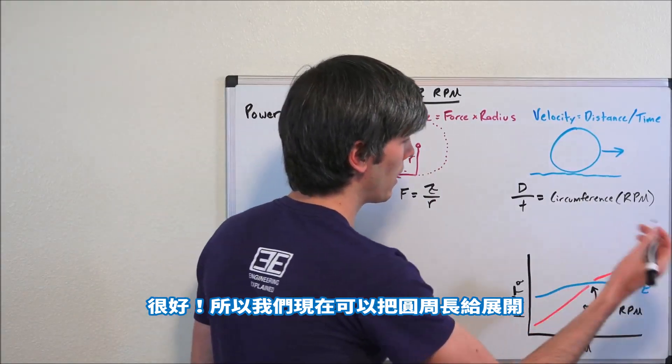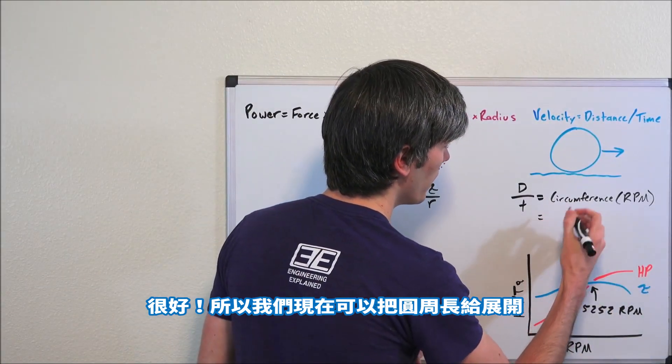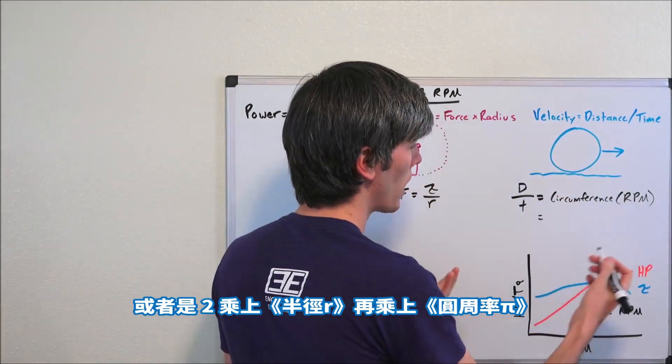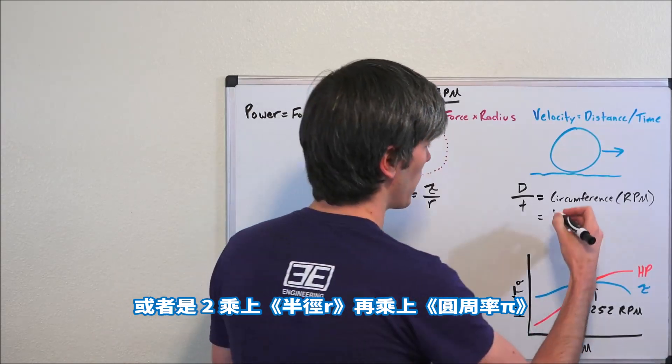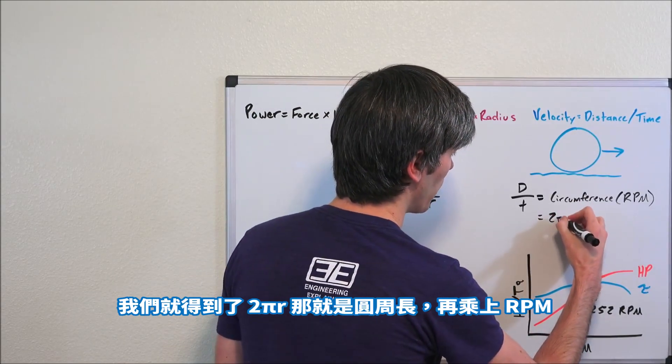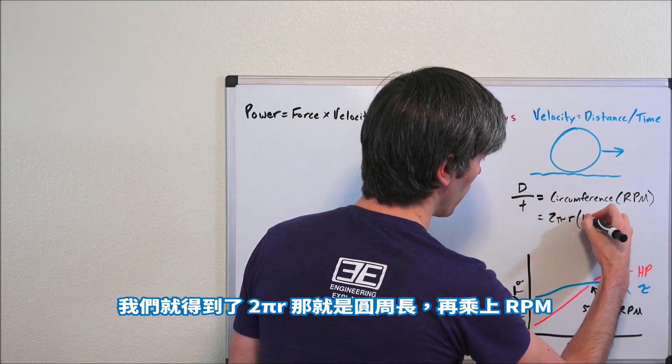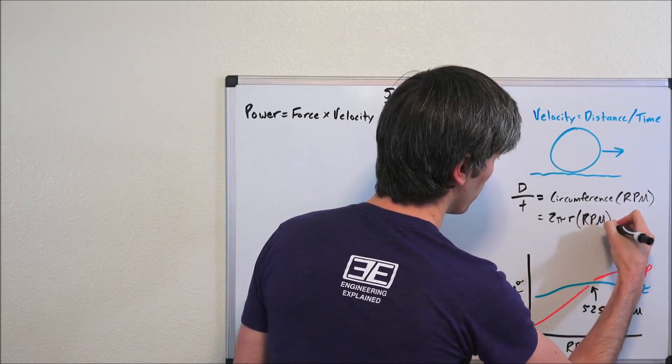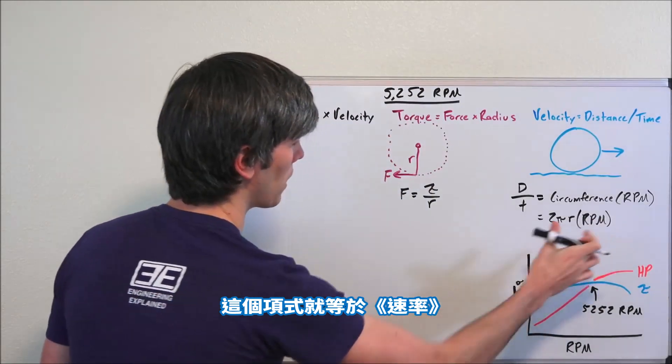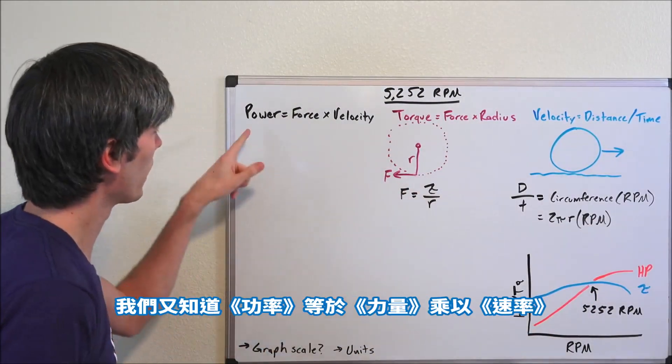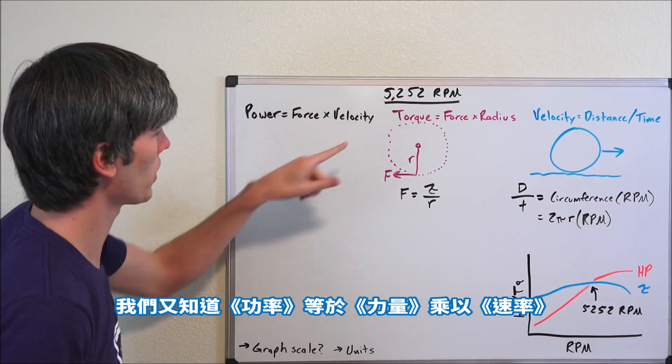So we can now state this as circumference. The circumference is equal to pi times the diameter, or 2 times pi times the radius. So we have 2πr - that's our circumference - multiplied by RPM. This is equal to velocity. This is force: force is equal to torque divided by radius. And we know that power is equal to force times velocity.